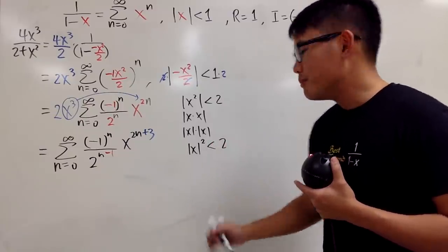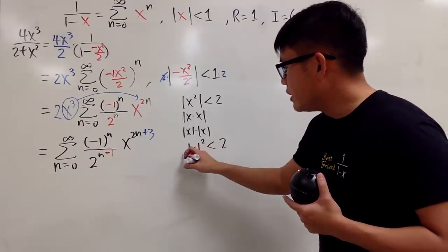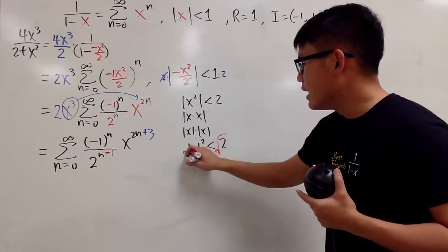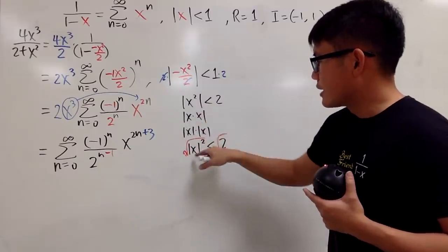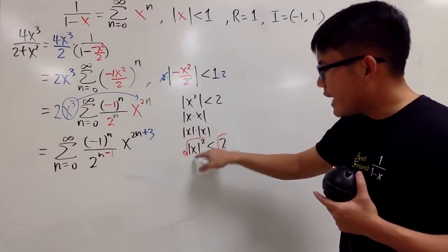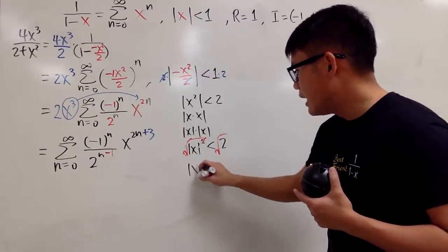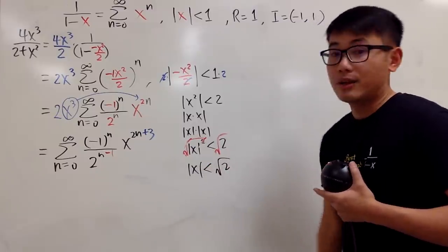Why do I want to show you? Because right here, to get x by itself, I can legitimately just take the square roots on both sides, because I know the input here is always positive. This is just like a little proof that absolute value of x squared, it's the same as absolute value of x and then square, right? So that's pretty much it. And you can keep this absolute value of x to be less than square root of 2, like that. Cool.